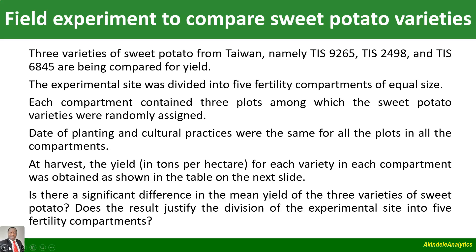At harvest, the yield in tons per hectare for each variety in each compartment was obtained, as shown in the table on the next slide. The questions are: is there a significant difference in the mean yield of the three varieties of sweet potato, and does the result justify the division of the experimental site into the five fertility compartments?